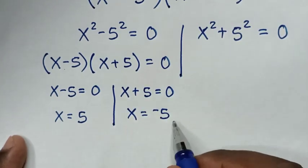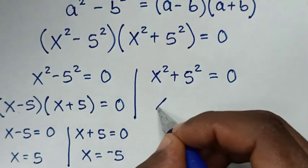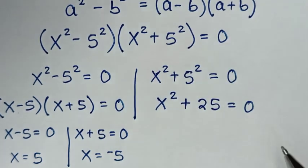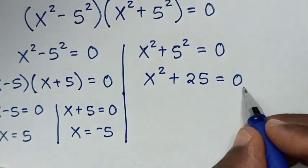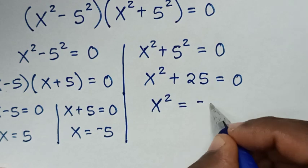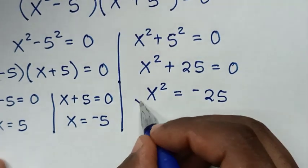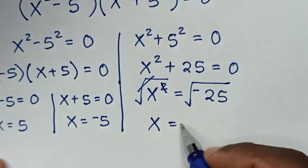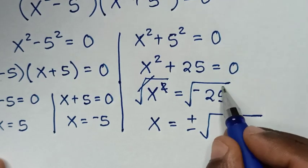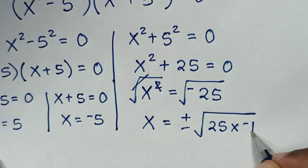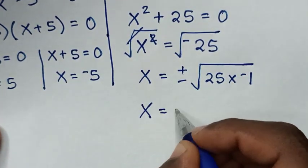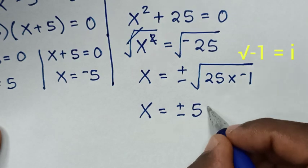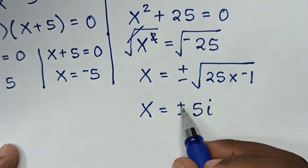Now for the second factor, x² plus 25 equals 0. Taking 25 to the right side gives x² equals negative 25. Applying square root to both sides, x equals plus or minus the square root of negative 25, which is the same as the square root of 25 times negative 1, giving x equals plus or minus 5i.